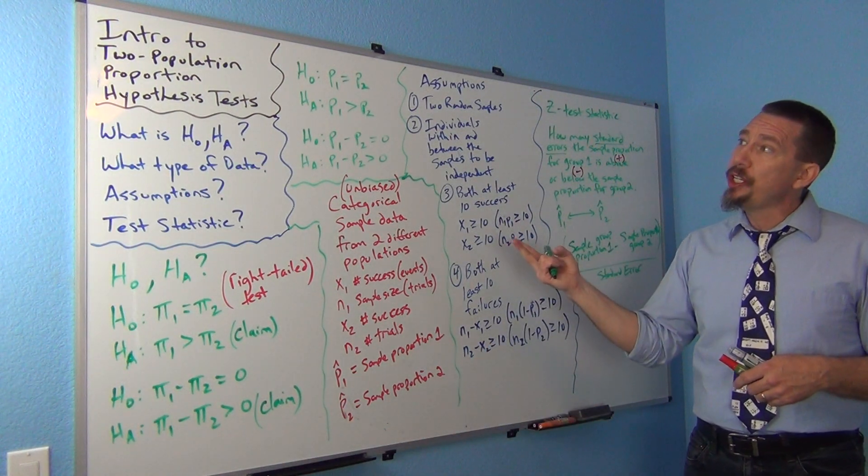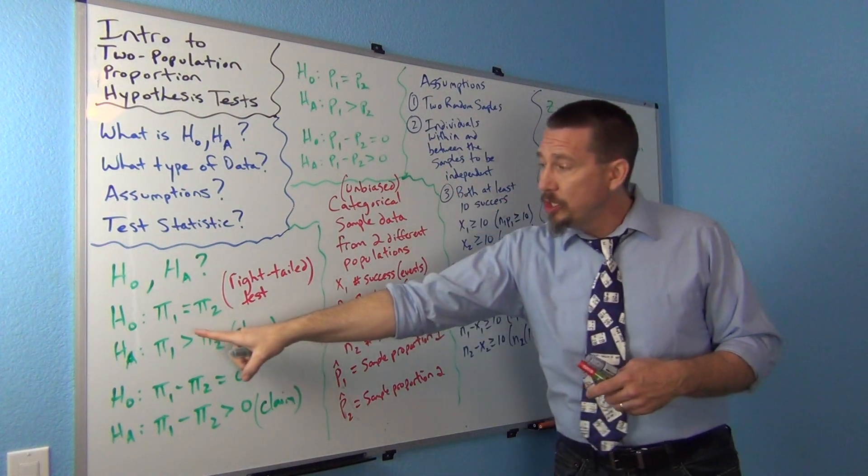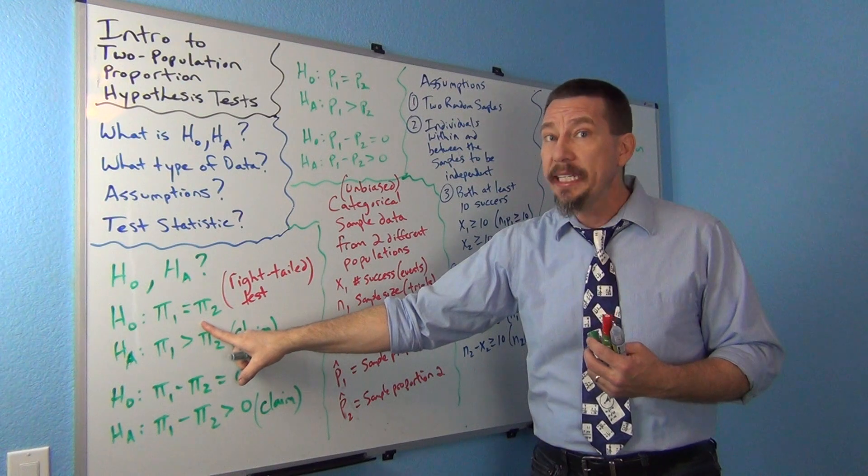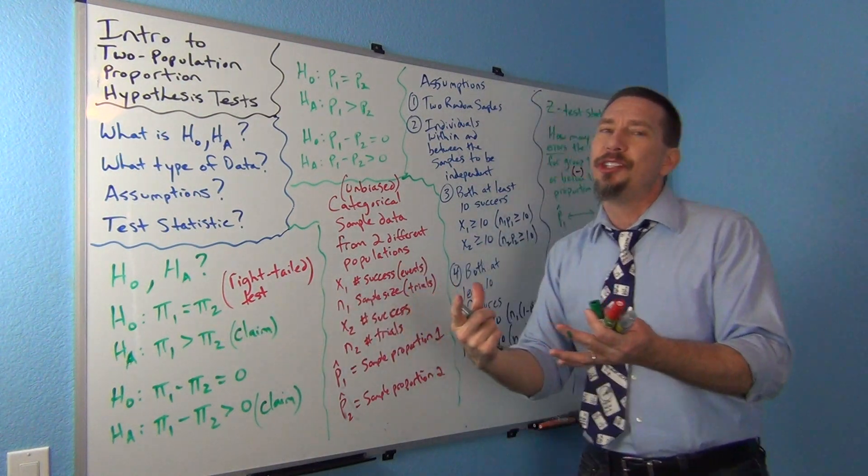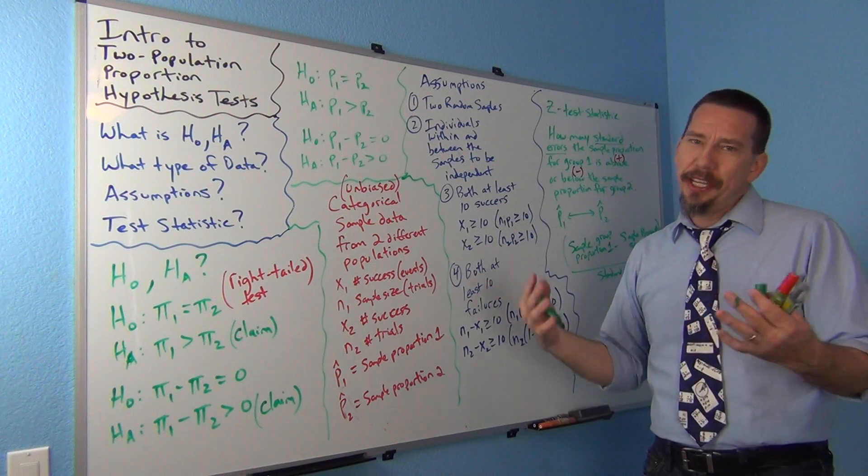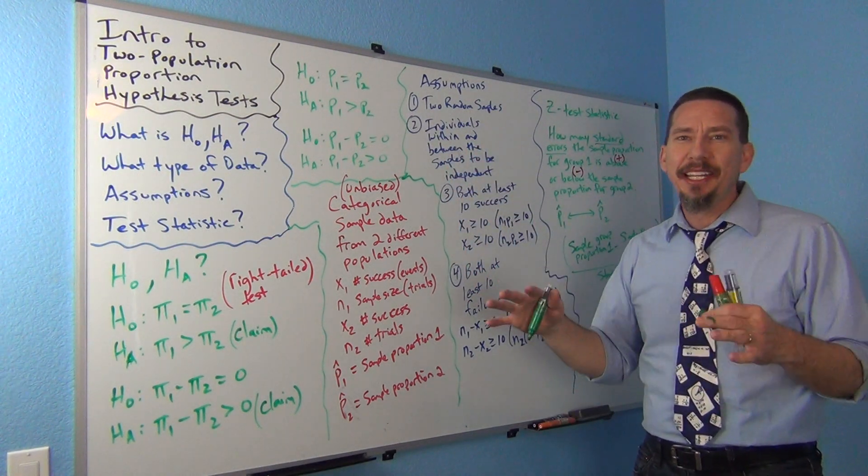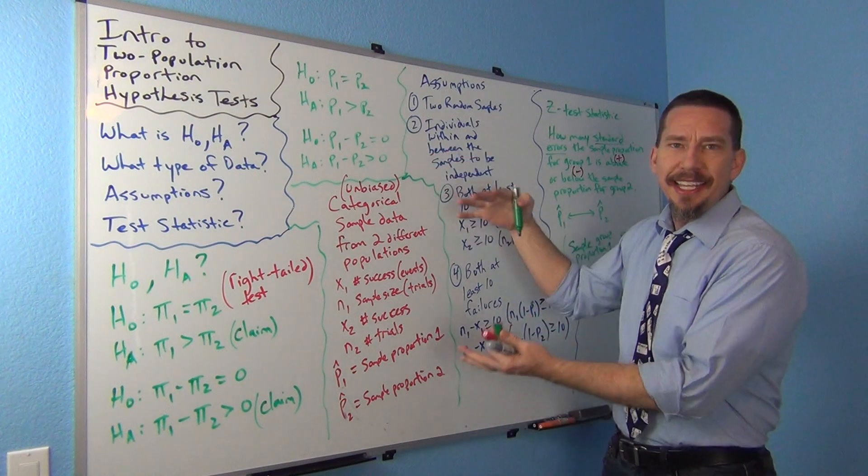But in two population proportion hypothesis tests, we are assuming in the null hypothesis that the populations are equal. That allows us to do a little tricky technique. It's called pooling. It comes with the name pooling, throwing everybody in the same pool. So, we're pooling. Pooling means putting your data sets together.